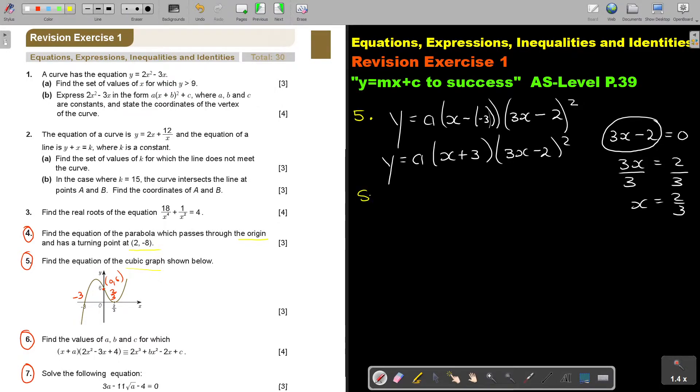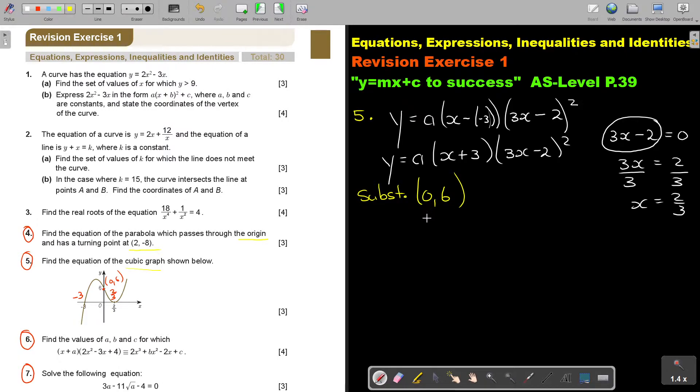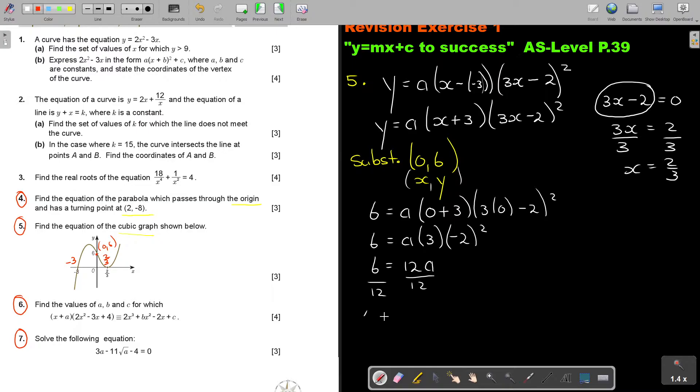Now I'm going to substitute the extra point, substitute 0, 6. Remember this is X, Y. So in the place of Y, I'm going to put now a 6 to find A. In the place of X, I put a 0. And that's 6 is equal to A times 3 times negative 2 squared. And that's 6 is equal to 12A. So I divide by 12, therefore A is equal to a half.